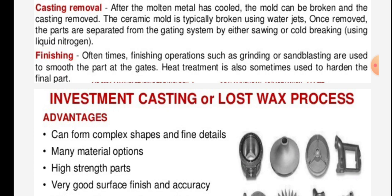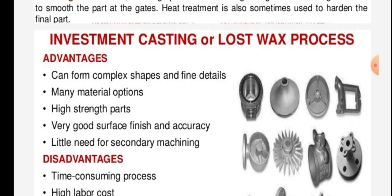Finishing operations such as grinding or sandblasting are used to smooth the part at the gates. Heat treatment is also sometimes used to harden the final part. Advantages of investment casting include: it can form complex shapes and fine details, many material options, high strength parts, very good surface finish and accuracy, and little need for secondary machining.